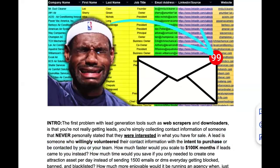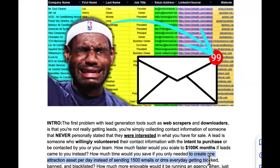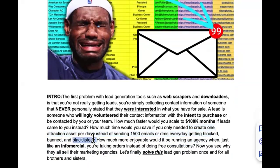When you scrape leads and plug them into instantly.com after buying your domains and warming them up just to do cold email, those are not really leads. Those are just people's data who have no idea who you are and are probably going to get upset. How much faster would you scale to hundreds of thousands of dollars per month if real leads came to you? How much time would you save if you only needed to create one attraction asset per day instead of sending 1,500 emails or DMs every day getting blocked, banned, or blacklisted?